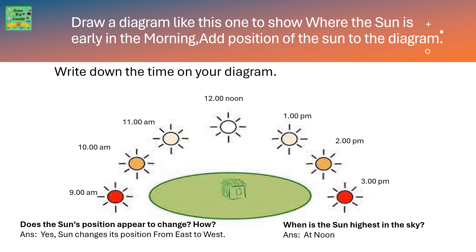Does the sun's position appear to change? Yes, the sun's position appears to change from east to west. When is the sun highest in the sky? At noon.